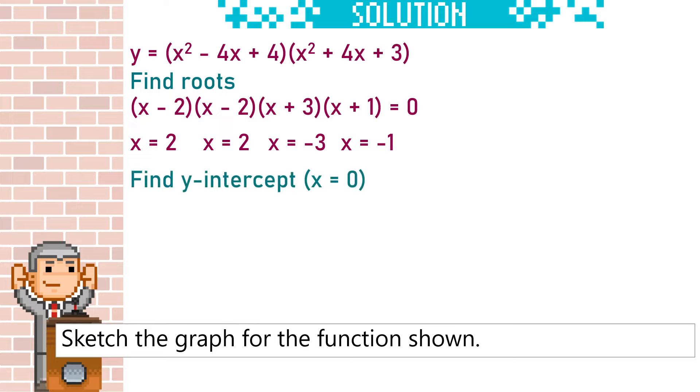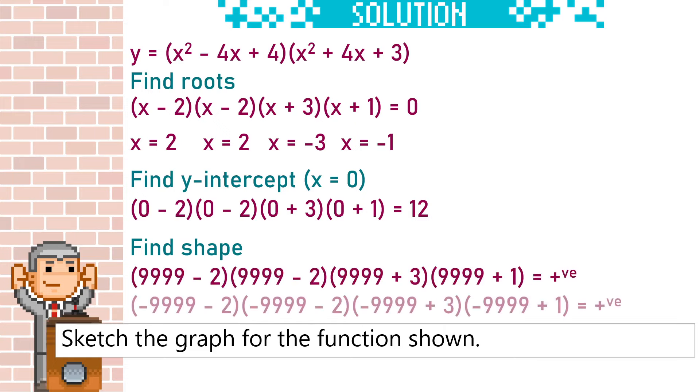To find the y-intercept, we're just going to substitute in 0 and we get our y-intercept as 12. And finally, to find the shape, we put in a really large positive number and a really large negative number and they're both positive, so our quartic will be positive. It will start high and end high.